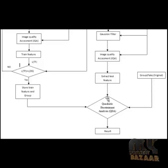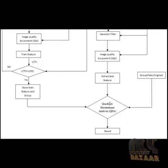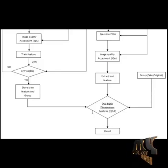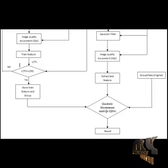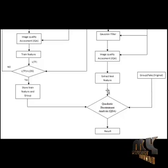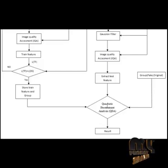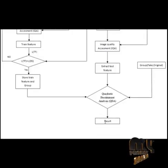The stored trained feature and group labels go to the classifier. The classifier first trains using the training feature compared to the group labels. Once training is complete, the test feature is compared to the trained feature and the classifier gives a result — either fake or original.